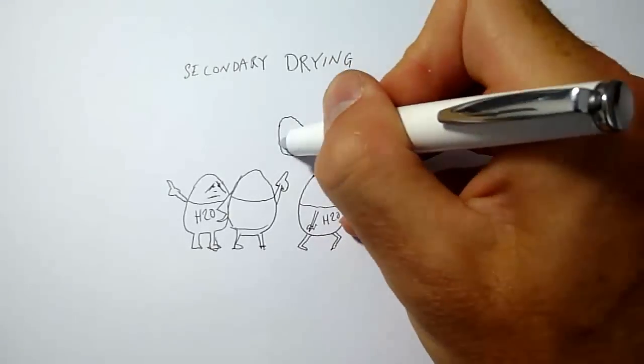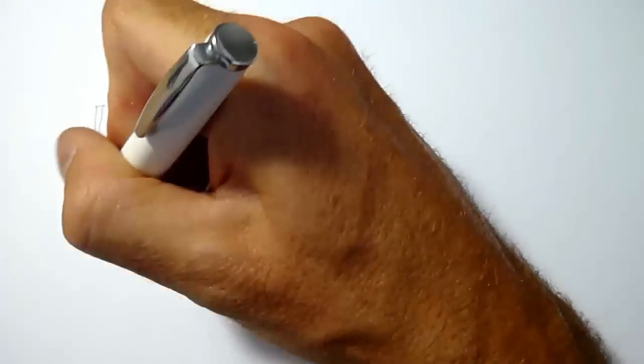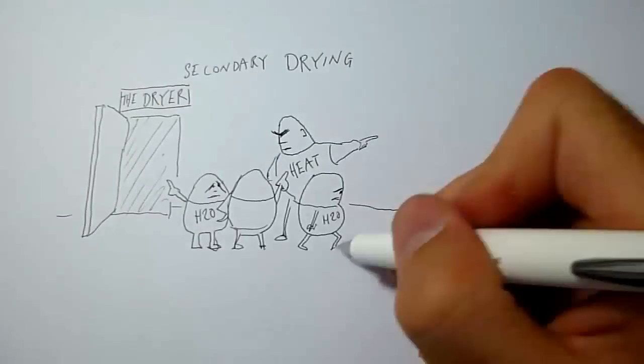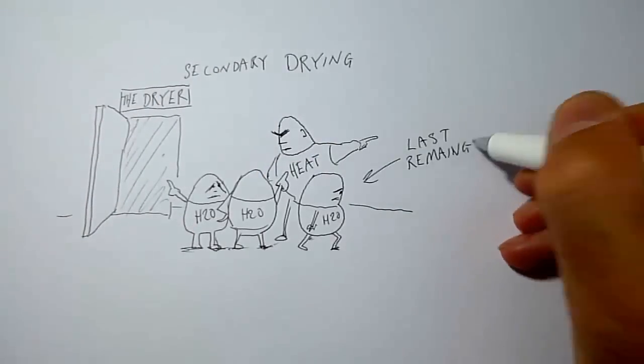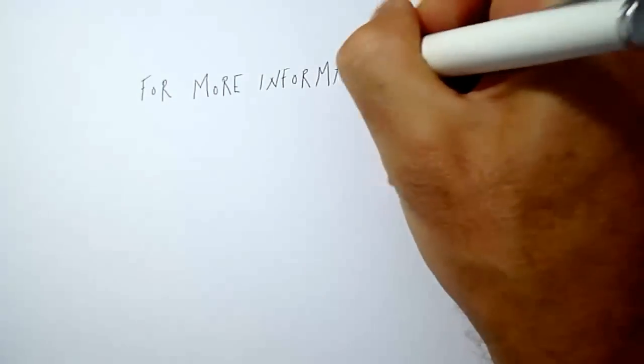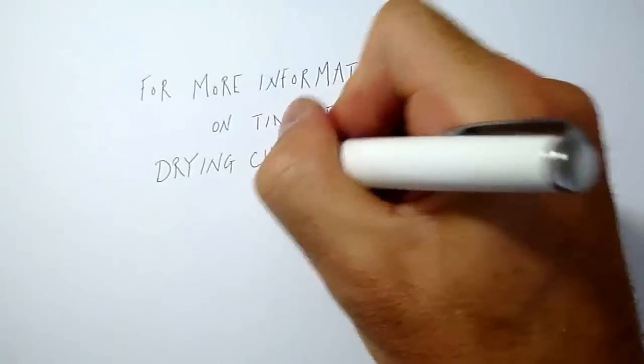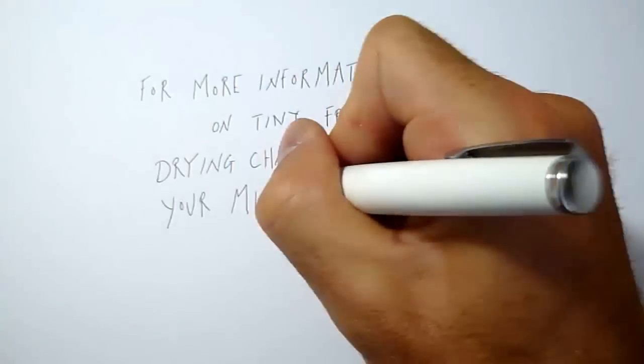Pressure is usually further reduced and the temperature increased. So as we can see, a freeze drying microscope is a pretty useful bit of kit for the scientists trying to optimize their freeze drying cycles. To find out more, please visit linkm.co.uk.